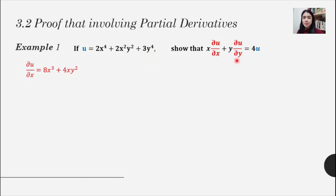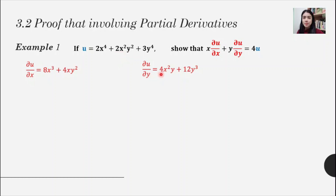Now we move to del u/del y, which means differentiating with respect to y, so we focus on y only. The x term is a constant, so differentiating gives zero. For the y squared term, differentiating gives 2y, multiplied by 2x squared, giving 4x squared y. The last term differentiates to 12y cubed.